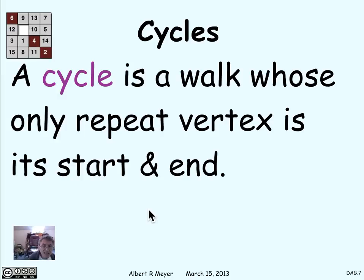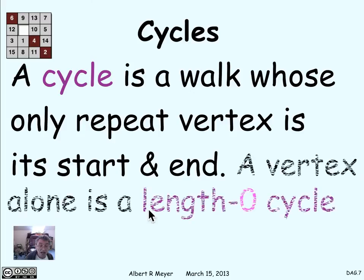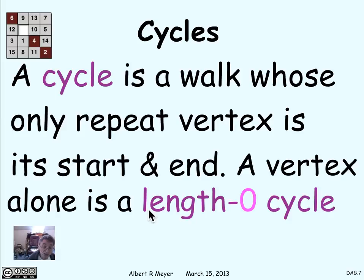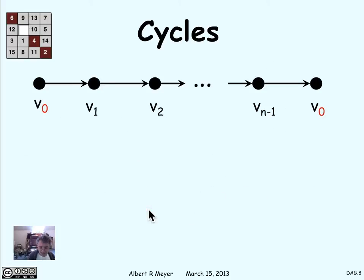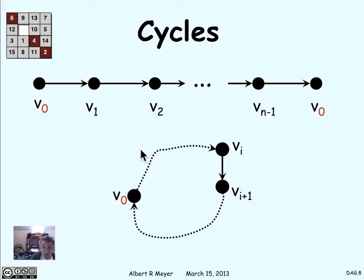A special case of a closed walk is a cycle. A cycle is a walk whose only repeat vertex is its start and end. Note that a single vertex all by itself is a length-0 cycle, so you're never going to be able to get rid of length-0 cycles because they're the same as vertices. But positive length cycles you can hope to ensure are not there. If you represent a cycle as a path, you'd show the sequence of vertices v0, v1, v2, ... where all vertices from v0 up to v_{n-1} are different — that's what makes it a cycle — except that the last vertex v0 is a repeat of the first one. That's the one repeat allowed in a cycle.